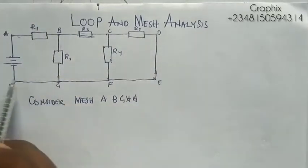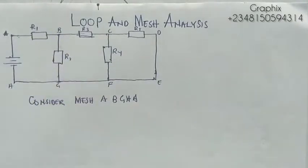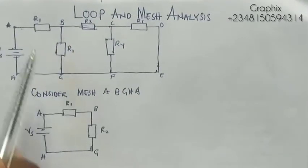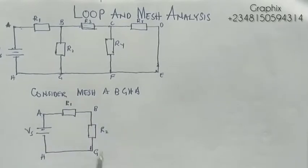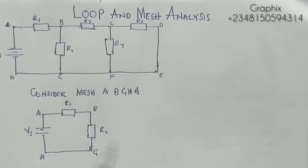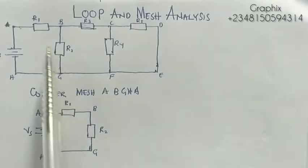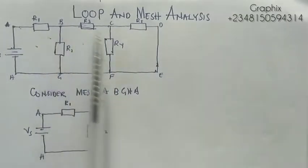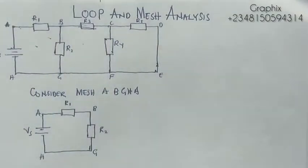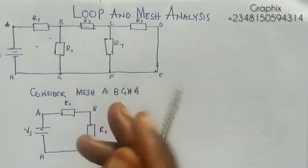This closed part here is a mesh. A mesh is a loop with no other loops inside. So this is a mesh and you can also call it a loop. But when you have other loops inside, like the larger circuit here which has more than three loops inside it, you call it a loop, not a mesh.